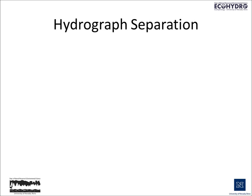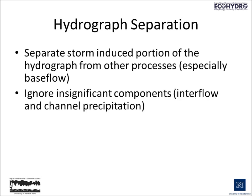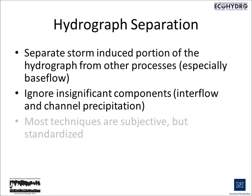Hydrograph separation really involves separating the storm-induced portion of the hydrograph from other processes, especially base flow. During hydrograph separation, we usually ignore what we think of as insignificant components — that would include interflow and channel precipitation — and only concentrate on the two components that we think are most important: base flow and the storm-induced portion of the hydrograph.